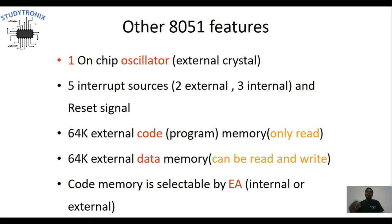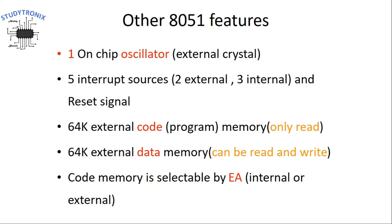Whenever a reset signal is given, the CPU starts executing the program from the starting address. Up to 64 kilobytes of external code memory can be interfaced to 8051 for storing the program — this is also called ROM or read-only memory. Additionally, another 64 kilobytes of external data memory can be interfaced to 8051 for reading or writing temporary data. Both memory capacities are 64 kilobytes because there are 16 address lines present in 8051.